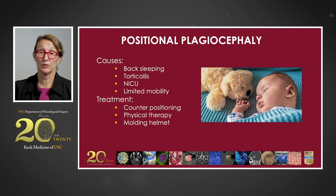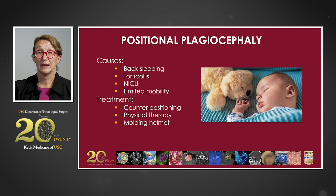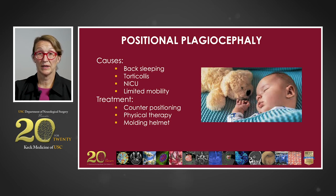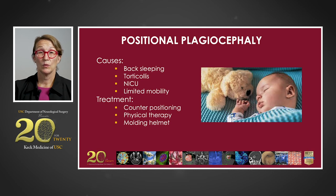The treatment for positional plagiocephaly is typically conservative. Counter positioning teaches parents methods to avoid the child always laying on the affected side. Physical therapy may help with torticollis, allowing the child to move the neck more freely. In severe cases, a molding helmet — an external orthosis — is used to reshape the head over a period of about three to six months. Molding helmets are typically most effective when used in the first year of life.